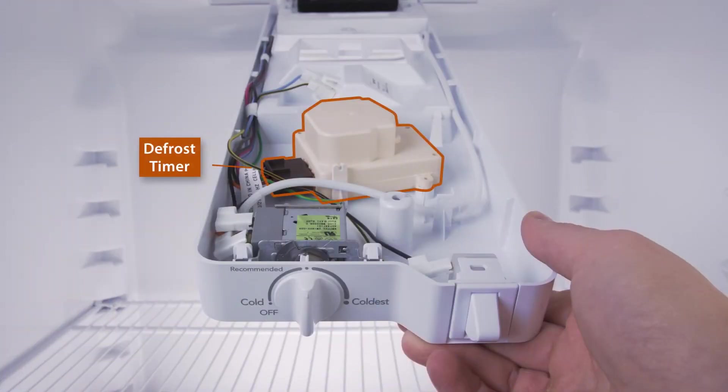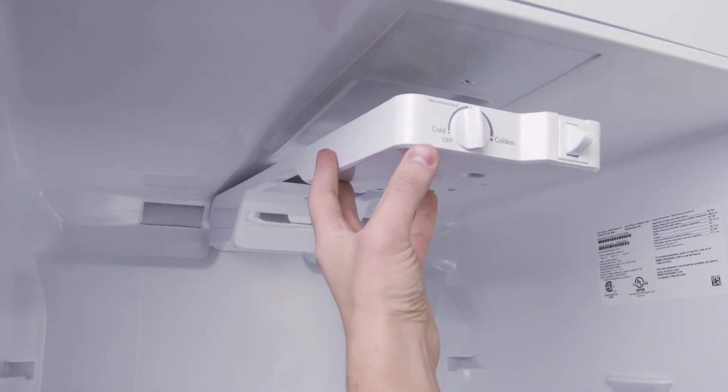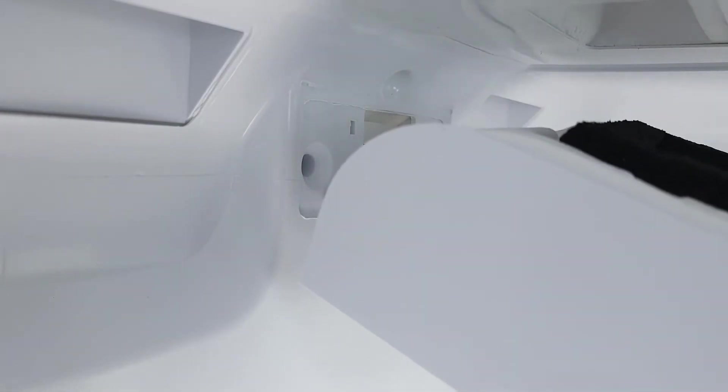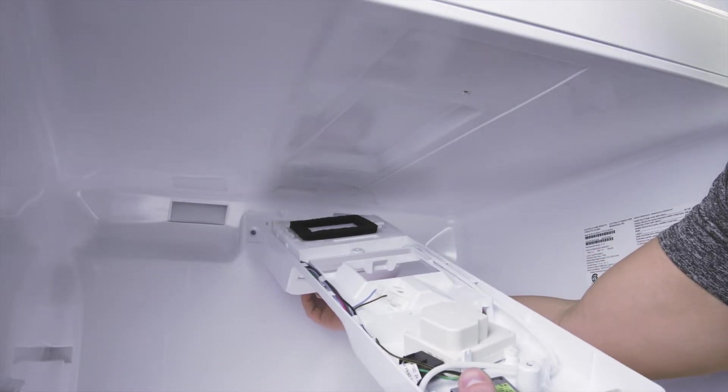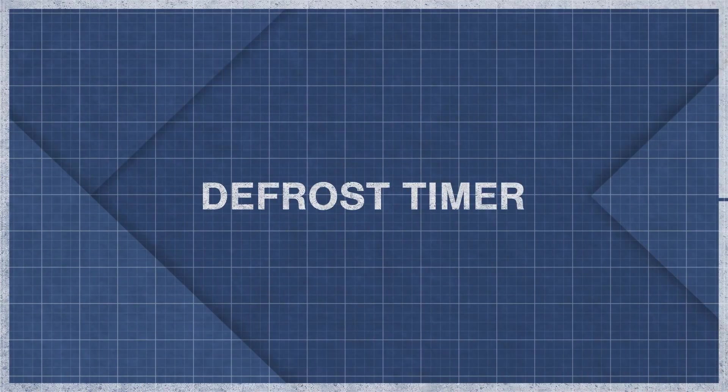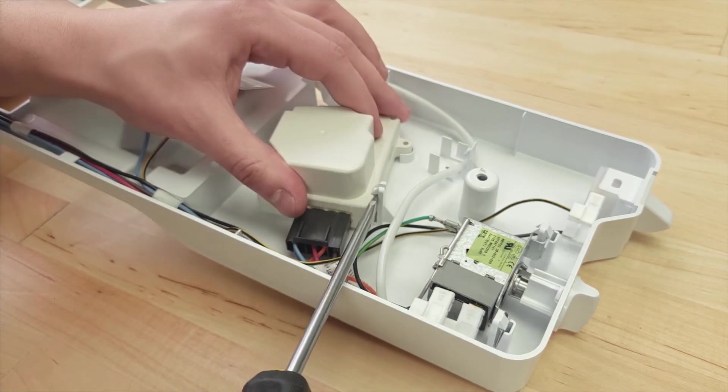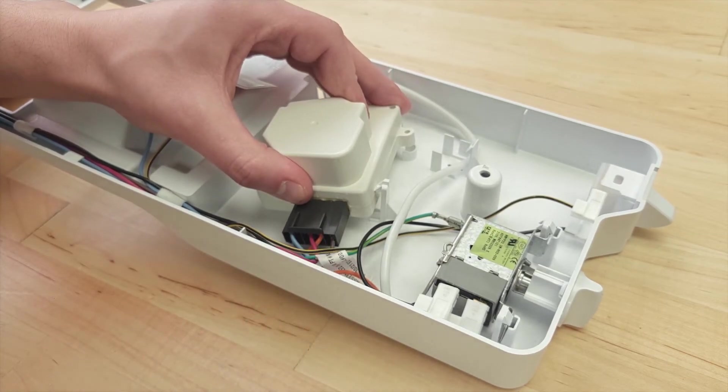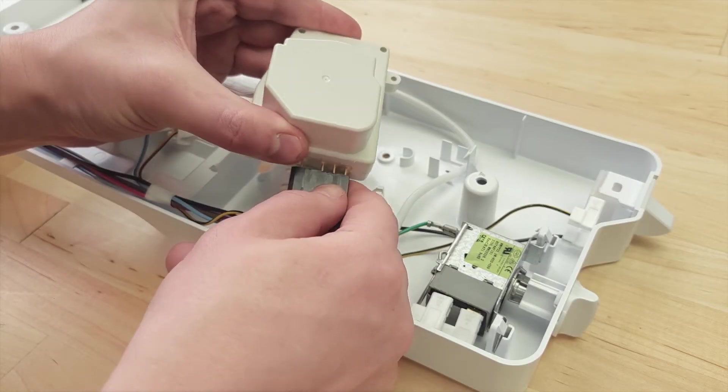The defrost timer is located in the control module, which is normally at the top of the fridge. Remove the screws and lower the control housing. It might be held in by plastic tabs, so don't force it or it might break. In some cases, you can disconnect the wires and remove the entire housing. First, remove the defrost timer. This might be held in by tabs or by a mounting screw. Now remove the wire connector.